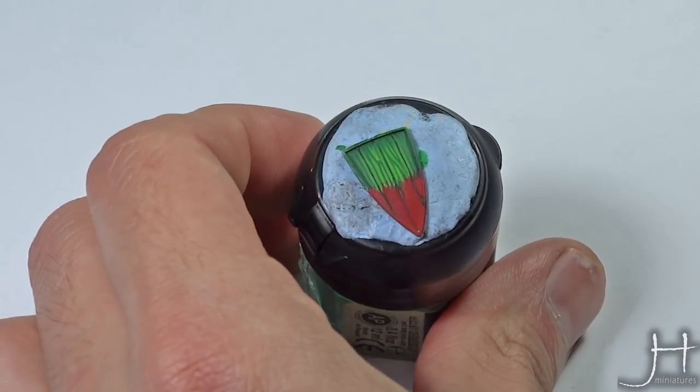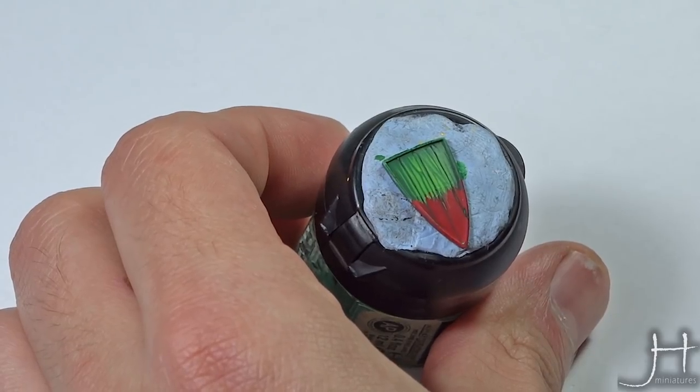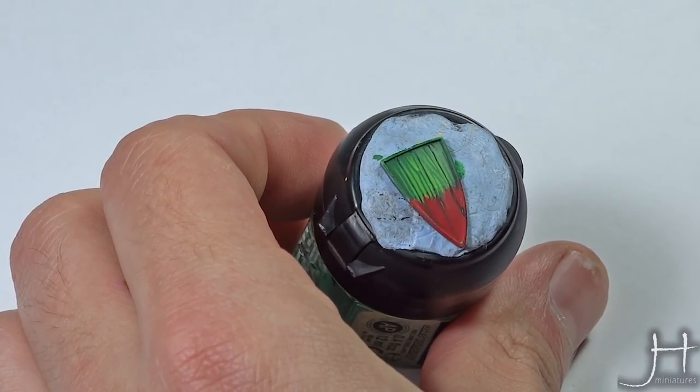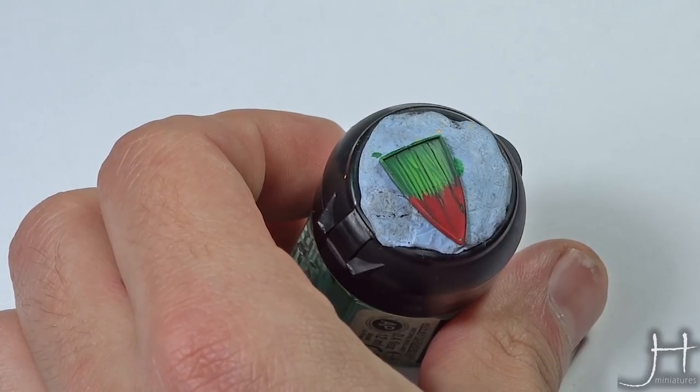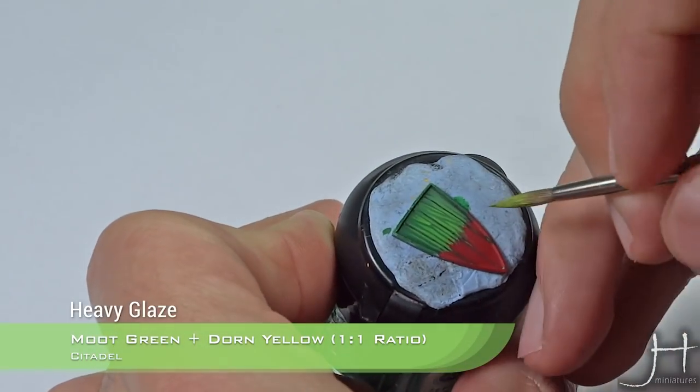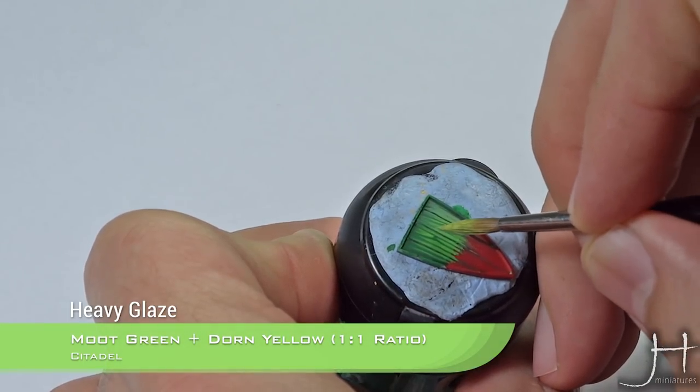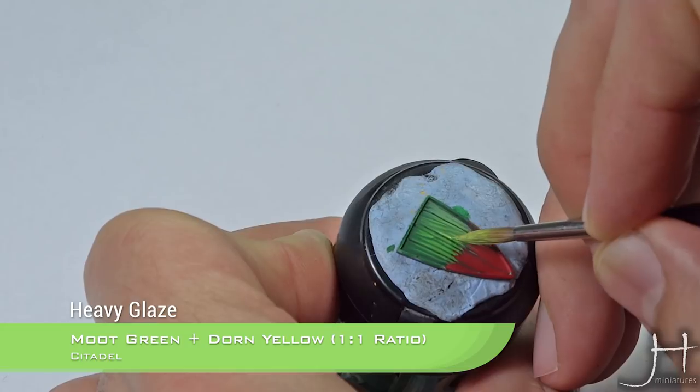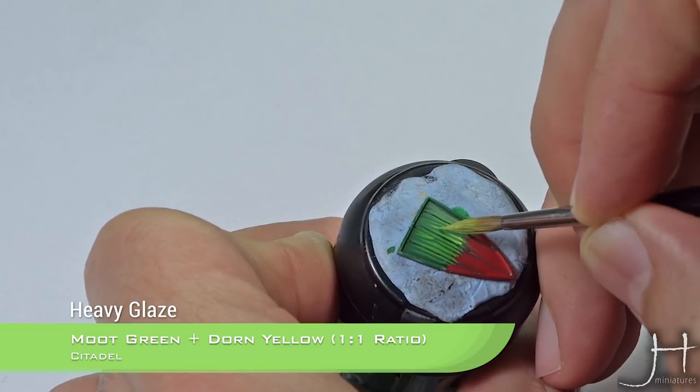You see we have the shield now highlighted with Moot Green. Then for the next highlight we will mix a 50-50 mix of Moot Green and Dorn Yellow. I will try to apply this just in the most center parts of the shield. This will help, as I said, bring kind of a 3D effect.